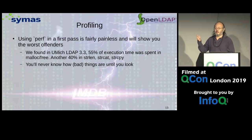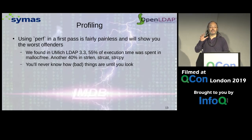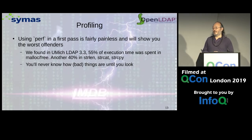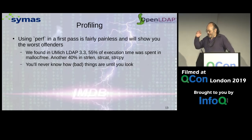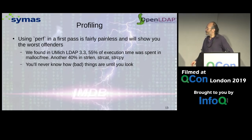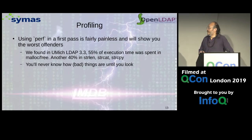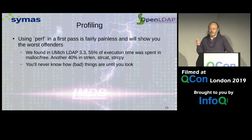Perf is so easy to use — this should always be your first go-to tool, and the results can be fairly obvious. In the very first version of OpenLDAP, which was inherited from University of Michigan, we found 95% of our execution time was in the C library, and basically only 5% of the time was executing LDAP protocol. This code was pretty horrible to begin with — representative of code written in the mid-1990s. People were not taught to think about memory allocation, and they used the standard C string library because that's what every C programmer does, even though it's really not that great. You never actually know how bad things are until you look.